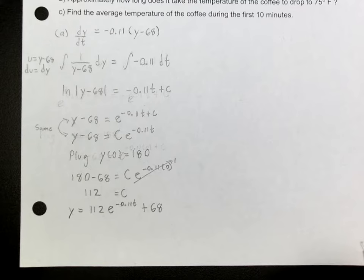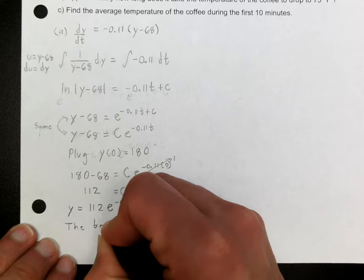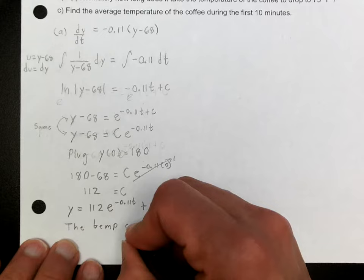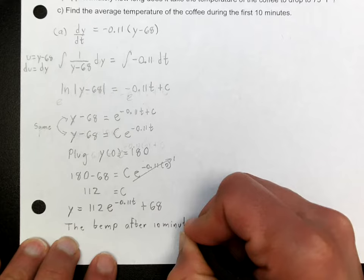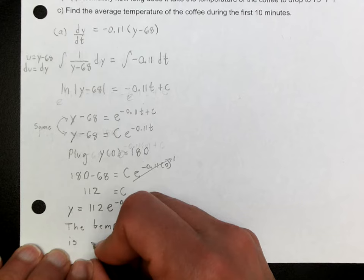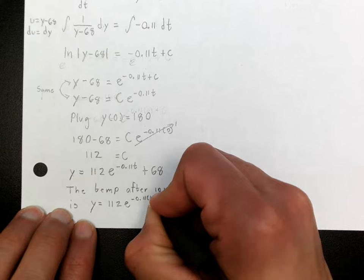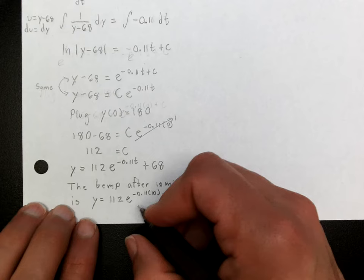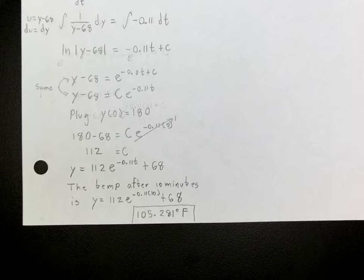That's the equation for temperature. For part A, we want the temperature after 10 minutes, so we plug t = 10 into y = 112e^(−0.11t) + 68 and use a calculator. The answer is approximately 105.281 degrees. That's the temperature of the coffee after 10 minutes.